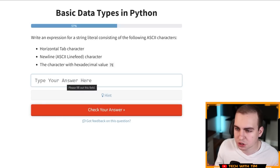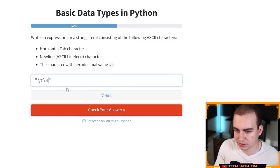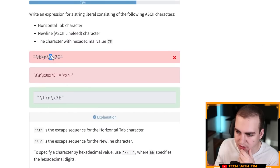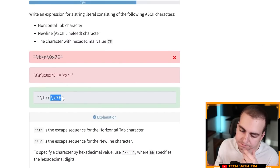Next question, write an expression for a literal or string literal consisting of the following ASCII characters, horizontal tab character, new line character, the character with hexadecimal value seven E. Oh my God. Okay. A string literal. So let's go horizontal tab. I believe is slash T, the new line character I believe is slash N it might be slash R here, but I think slash N is, is correct. And then the hexadecimal value, I have no idea what this would be, but I would imagine I would escape the zero zero X seven E. I don't know how to do the hacks at all. I think these are correct for the first two, but I have no clue what the hexadecimal is. So let's just try that. Okay. Of course that's incorrect. What is it saying? The answer is here. Okay. So I didn't need the zero. I just need to escape the X seven E and there we go. Okay.